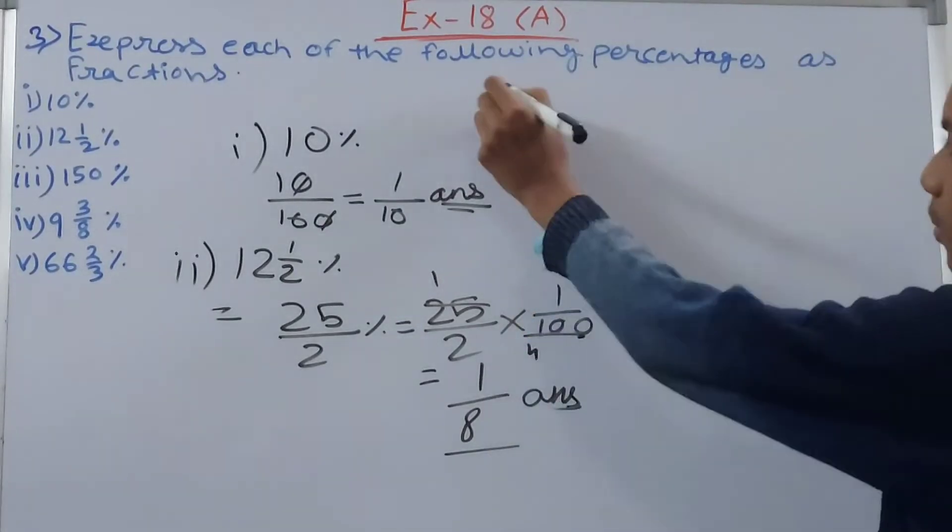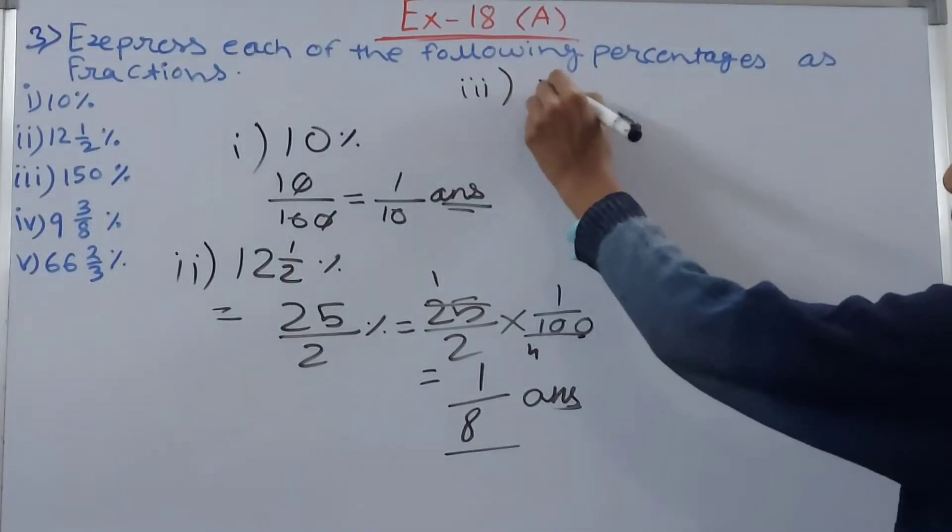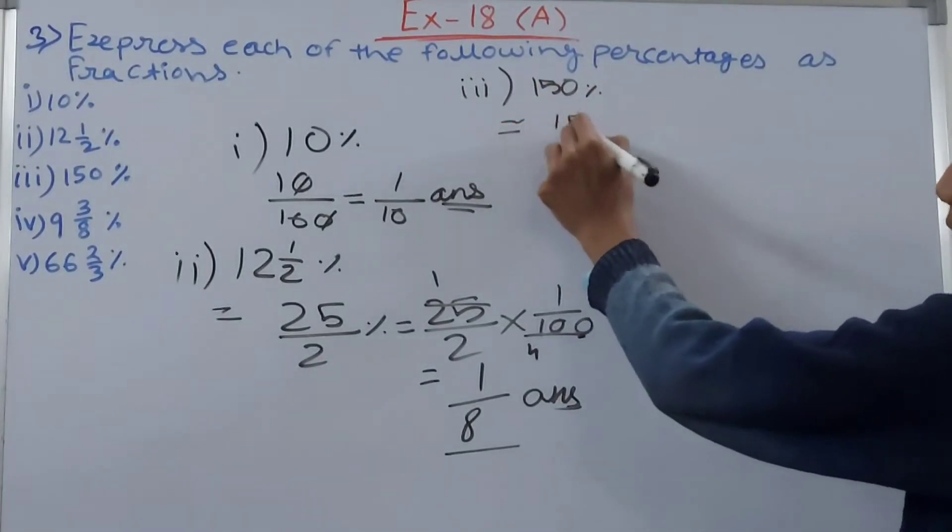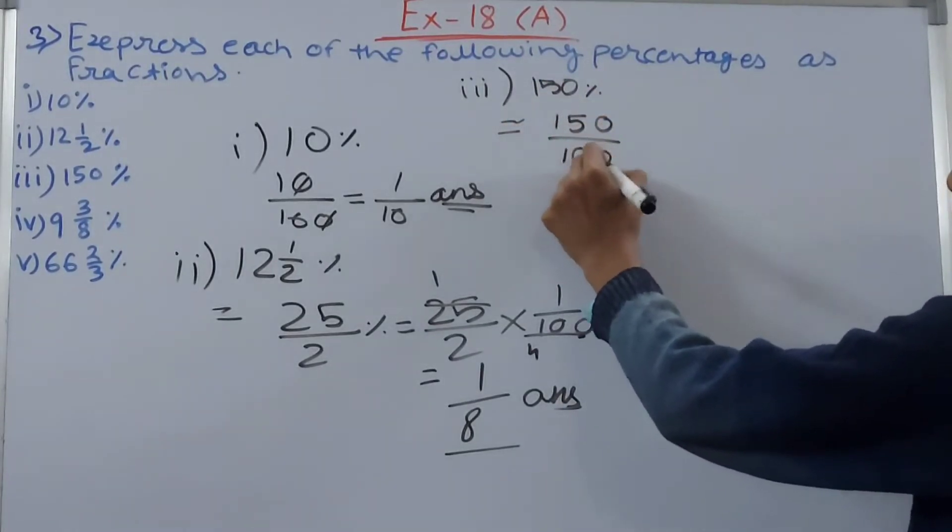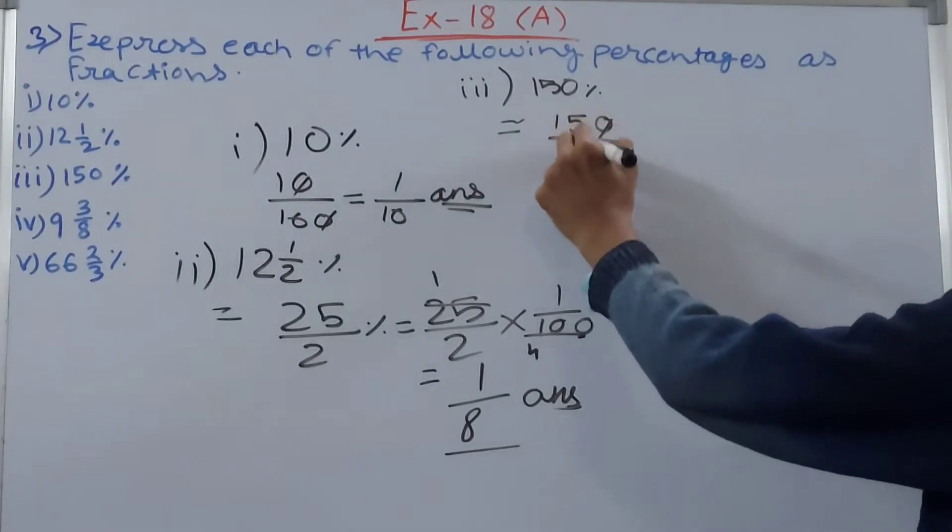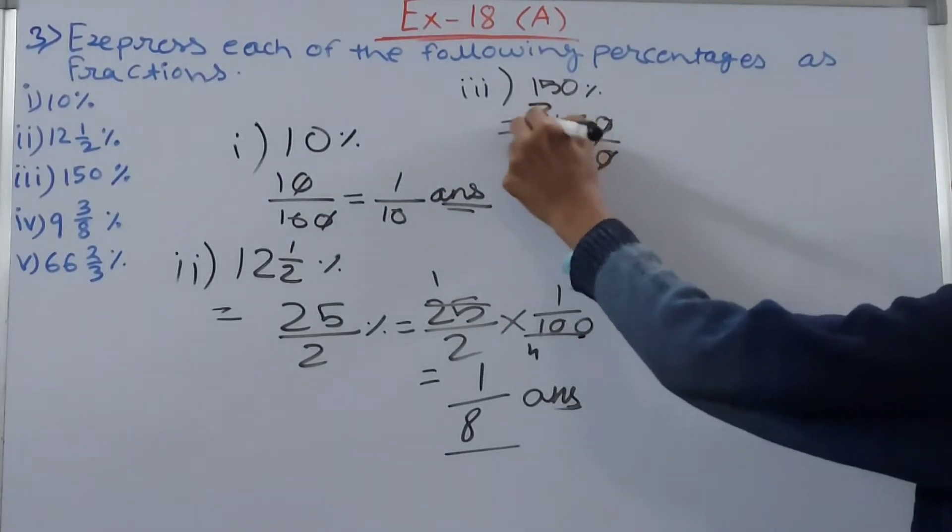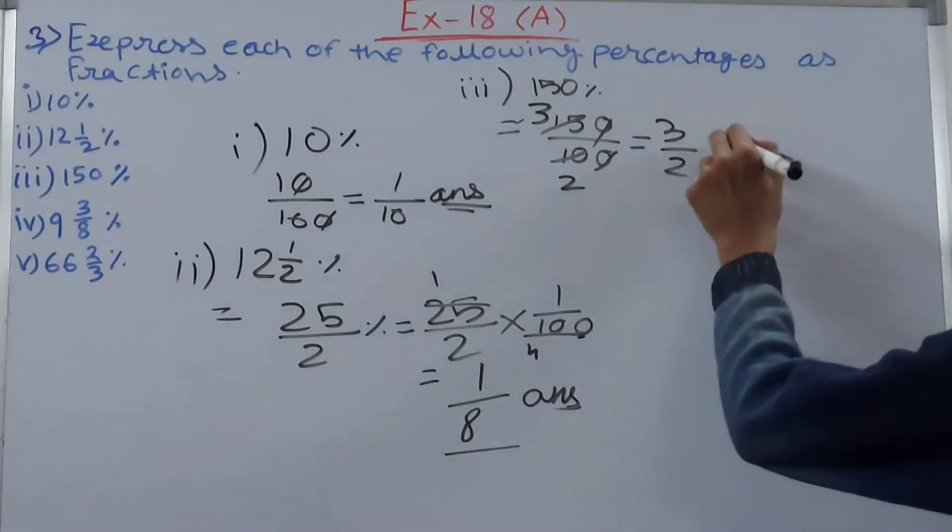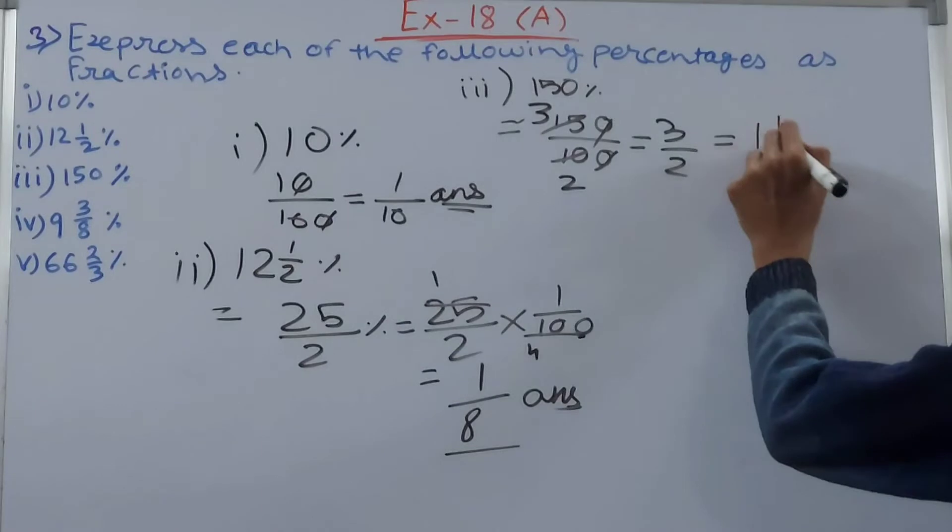Next one is third part, and what do we got here, 150 percent. Same thing, divide 150 by 100, so you get here cut this 0, cut this 0, 2 and 3, so 3 upon 2 or you can convert this into a mixed fraction so you get 1 whole 1 upon 2.